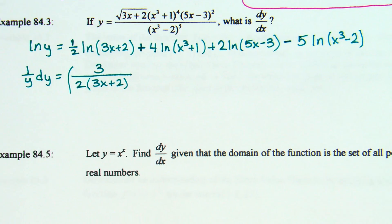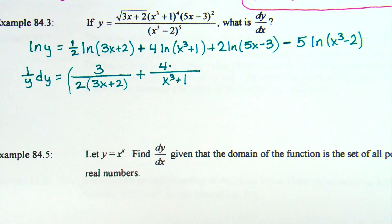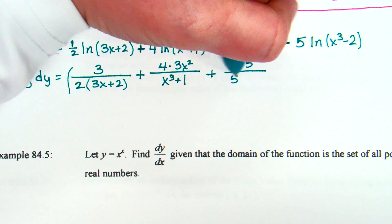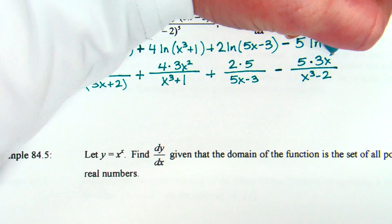The 4 out front: derivative of natural log of (x³ + 1) — x cubed plus 1 goes on bottom, derivative of x cubed is 3x squared, times the 4 already up there. Plus: 2 times — the derivative of natural log of (5x − 3) gives 5/(5x − 3) — the 2 stays on top, (5x − 3) on the bottom, derivative of (5x − 3) is 5. Minus 15x squared over (x³ − 2) — the 5 is on top, (x³ − 2) goes on bottom, and the derivative of x cubed is 3x squared — that's why Trevor said 15x squared.